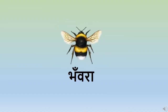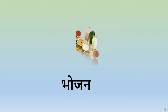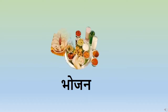Bha se bhalu — in English we call it a bear. Bha se bhara — in English we call it a bumblebee. Bha se bhujan — bhujan means a meal. Yes, children, you can see in the picture that food is served in a plate.